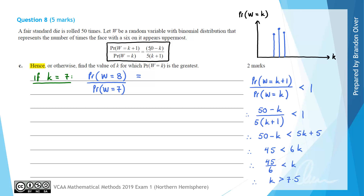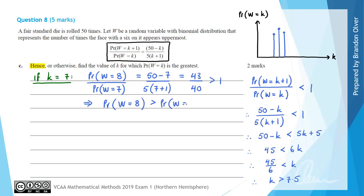43/40 is greater than 1, meaning the probability that W equals 8 is greater than the probability that W equals 7. Now considering K equals 8: the ratio becomes probability(W=9) divided by probability(W=8), which equals (50 minus 8) divided by 5 times (8 plus 1), giving 42/45, which is less than 1.